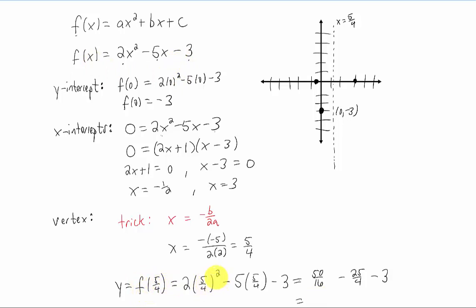Unfortunately, that means dealing with some fractions. The notation for this is f of five fourths. If we square this fraction and then multiply it by two, we end up getting 50 over 16. If we multiply five by five fourths, we get 25 fourths. We leave the minus three here.